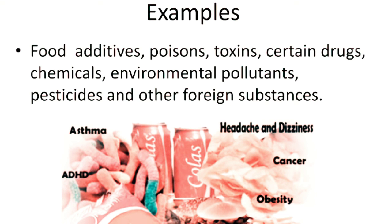Looking at examples of xenobiotics — in the picture you can see some common food items that we consume. These food items contain preservatives, colors, or sweeteners. All these artificial things which are foreign to our body, when they accumulate, lead to toxicity. Apart from that, drugs, pollutants, insecticides and pesticides present on vegetables — all these come under examples of xenobiotics.